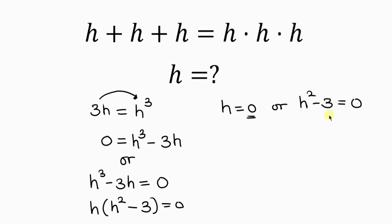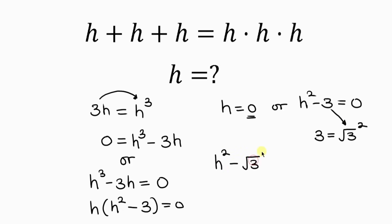The first case gives us H equal to 0. Now for the second case, I'm going to pay attention to the 3. The number 3 is the same as the square root of 3 raised to the power 2, because the square cancels the square root, leaving behind 3. So I'll replace 3 with square root of 3 squared, giving H squared minus the square root of 3 squared equals 0.